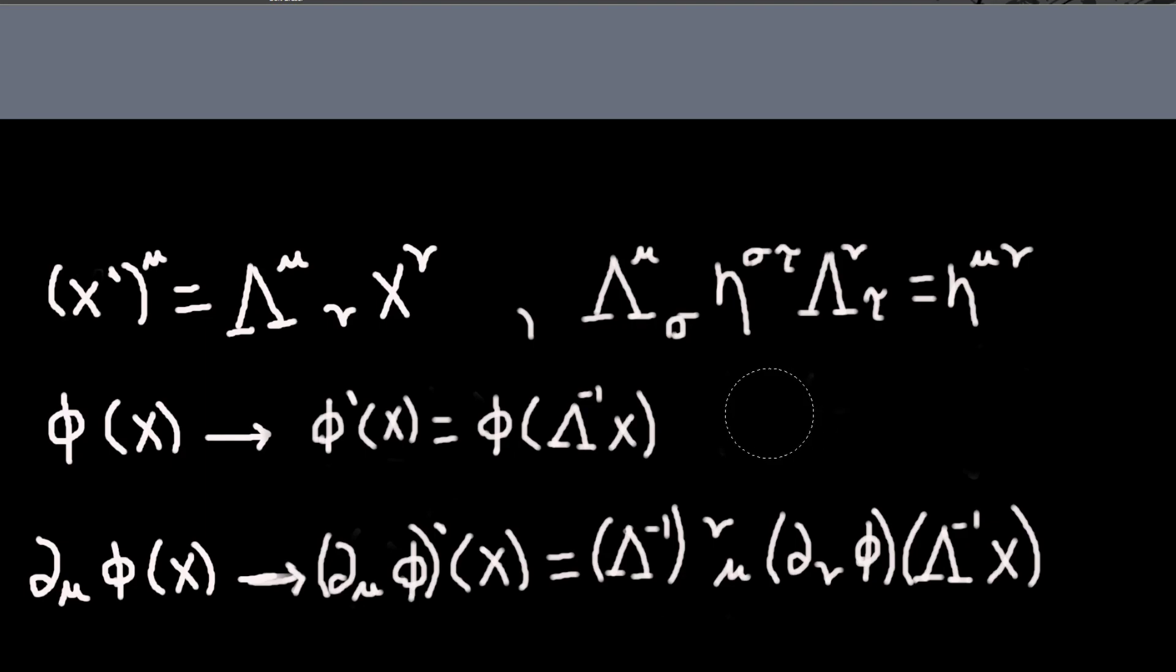So I can draw a little picture to demonstrate that. So say we have just our phi of x. So a scalar field just has a value at each point. So let me just say it's warm over here and cold over here.